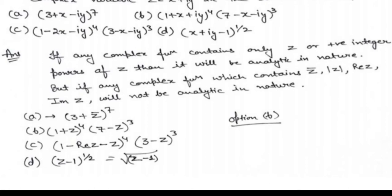In option B, we can write it as (1 + z^4)^7 multiplied by (7 − z^3) or a similar combination. Taking the common terms, the remaining expression involves only x + iota y, i.e., positive integer powers of z. Therefore, option B is analytic.